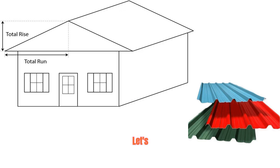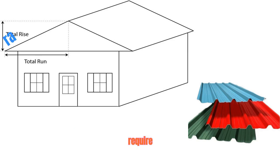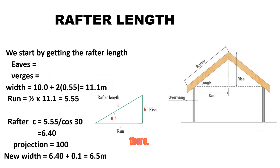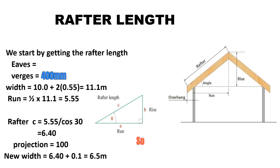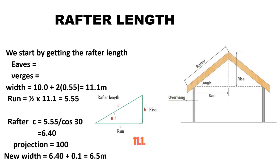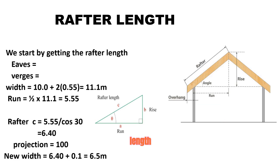This is our roof here. Let's take a length of 12 meters and a width of 10 meters. We are going to need to get the rafter length. We have the run here — the run is half the span of the width — and then we have the rise here. Our eaves is 550 millimeters and then the verges is 400 millimeters. So the new width of the rafter will be 10 meters plus two times the eaves of 550, giving us 11.1 meters. The run is half of that, which is 5.55 meters.